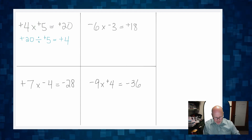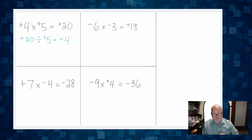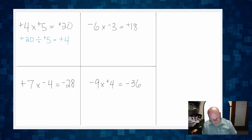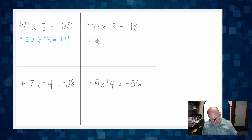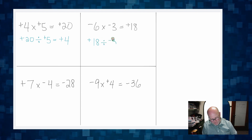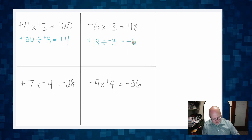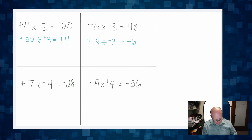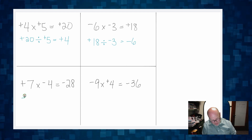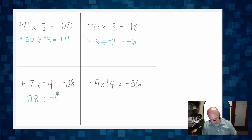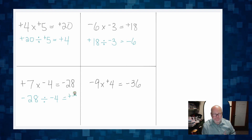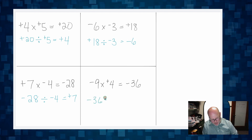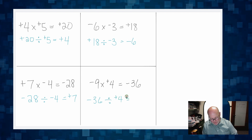Given that, what would the division statement be for negative six times negative three equals positive 18? After a little grappling, students say: positive 18 divided by negative three is equal to negative six. For positive seven times negative four equals negative 28: negative 28 divided by negative four equals positive seven. And lastly: negative 36 divided by positive four is equal to negative nine.